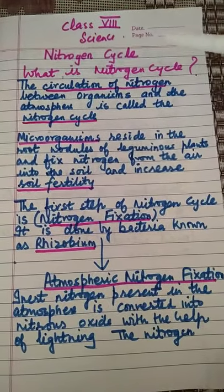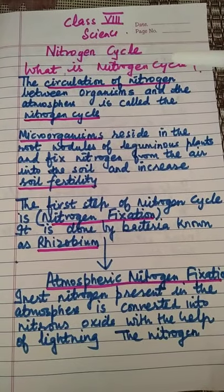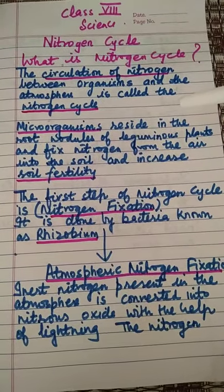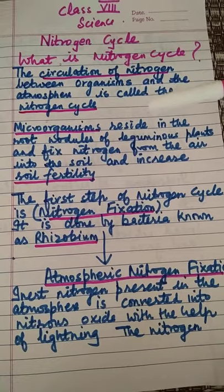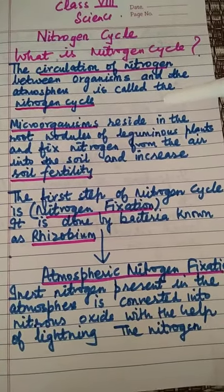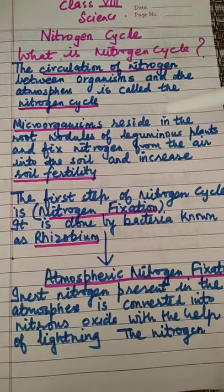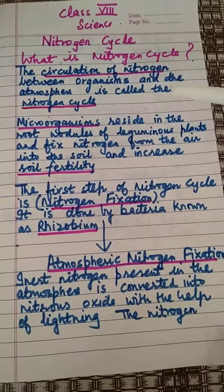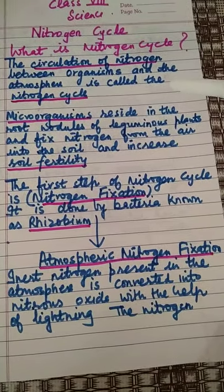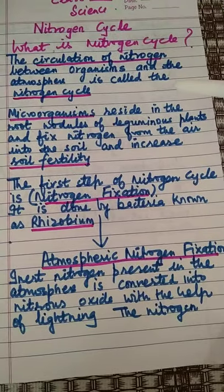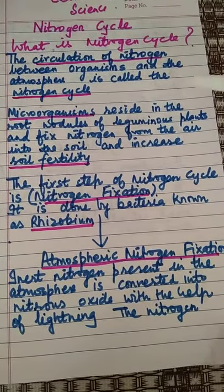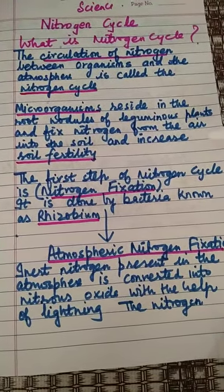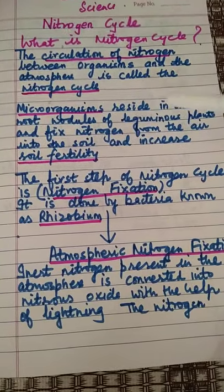Micro organisms reside in the root nodules of leguminous plants and fix nitrogen from the air into the soil, thereby increasing soil fertility. This is the first step of the nitrogen cycle, known as nitrogen fixation.